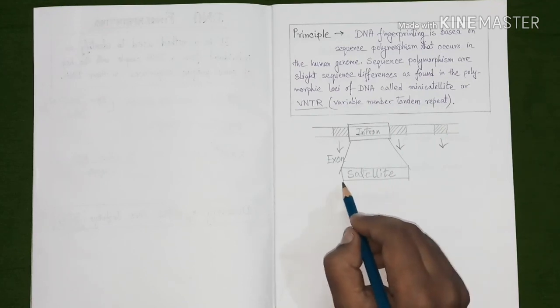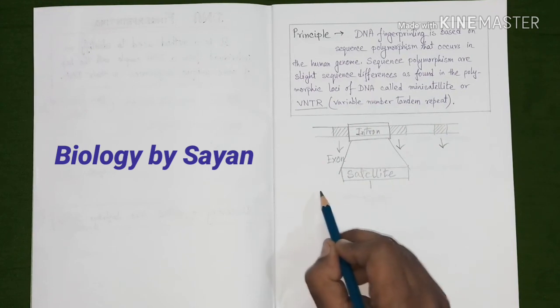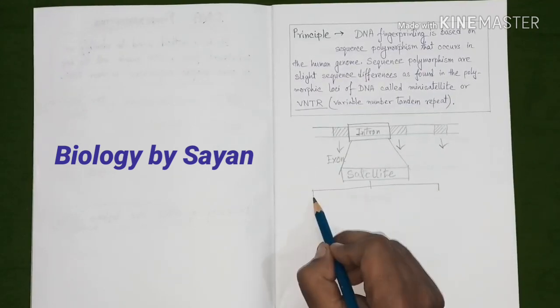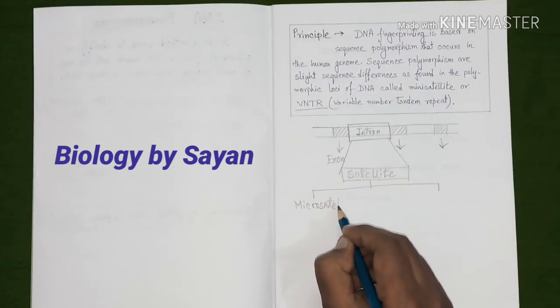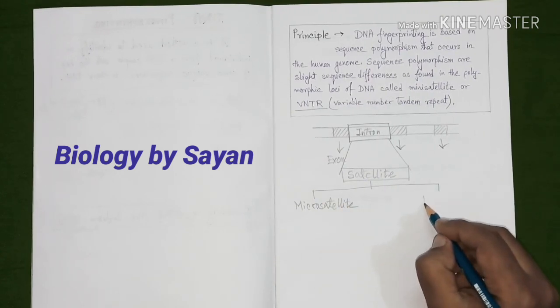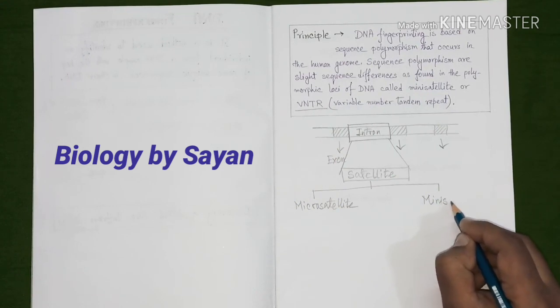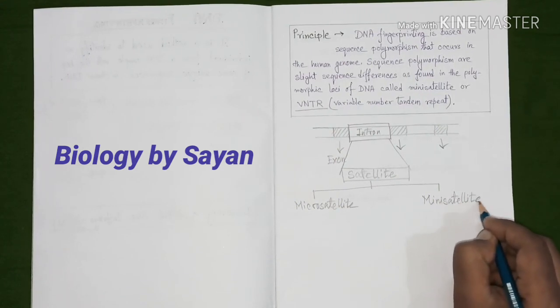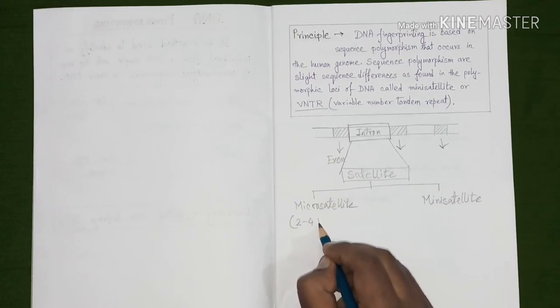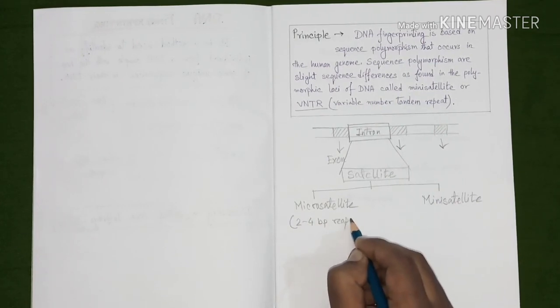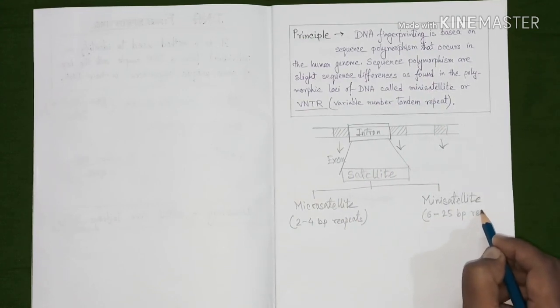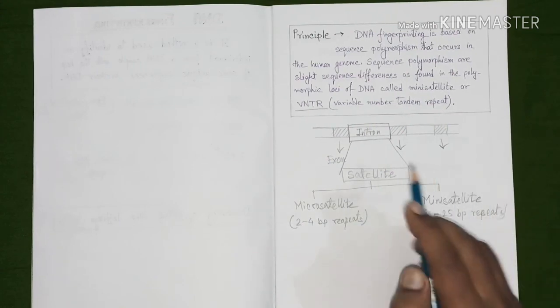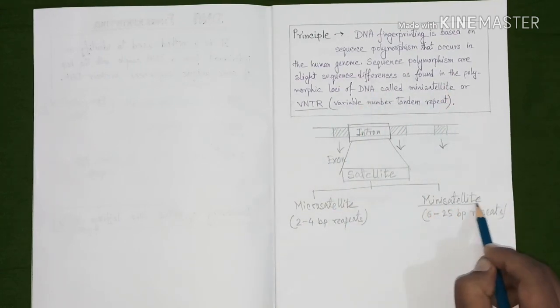Now for better understanding, we have to know about the different types of satellite DNA. Satellite DNA are of two types. Number one, micro-satellite. And number two, mini-satellite. Micro-satellites are stretches of two to four base pair repeats. On the other hand, mini-satellites are six to twenty-five base pair repeats. For the purpose of DNA fingerprinting, this mini-satellite is very important.